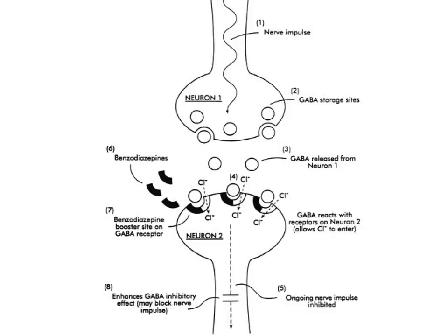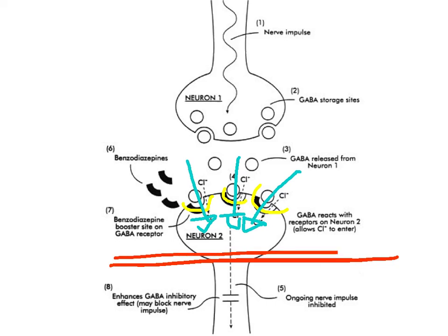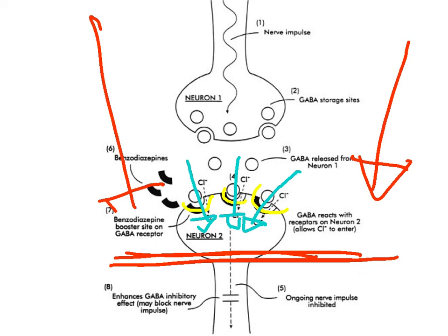So in a nutshell, the benzodiazepines bind with the receptor sites of the postsynaptic neuron, which enables more chloride ions to enter the postsynaptic neuron, which has a blocking effect in terms of the excitatory neurotransmitters, such as glutamate, making them less likely to fire.